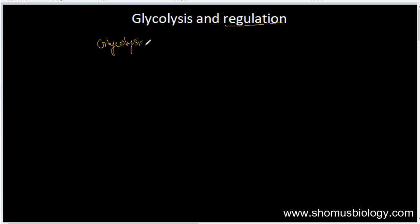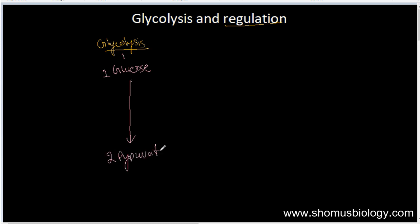Glycolysis consists of the conversion of glucose into pyruvate. From one glucose molecule, we produce two molecules of pyruvate. In this process, we need energy as ATP in two different stages: the preparatory phase of glycolysis, which consumes ATP, and the payoff phase, which provides four molecules of ATP as output.